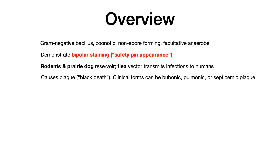The name Yersinia pestis is actually named for the bacteriologist Alexander Yersin, and pestis meaning plague, because this causes the Black Death, also known as plague. So pestis for plague, and Yersinia for Alexander Yersin.